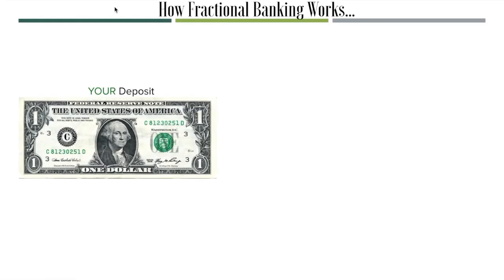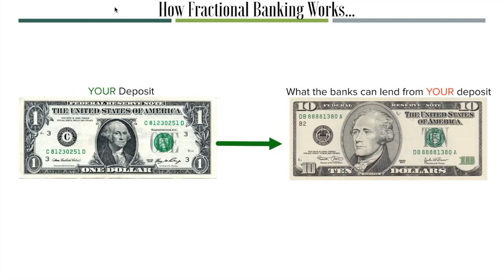I'm going to walk you through the fractional banking system, how it works, and how the banks make money by showing you on my computer so you can follow along. For every single dollar you deposit into the bank, the bank can lend ten dollars based on your one-dollar deposit. So if you deposit one dollar and that produces ten dollars worth of lending capital for the bank, where did the nine dollars go? We consider that 'funny money' because that money is actually not there.